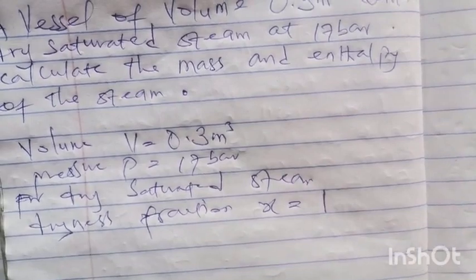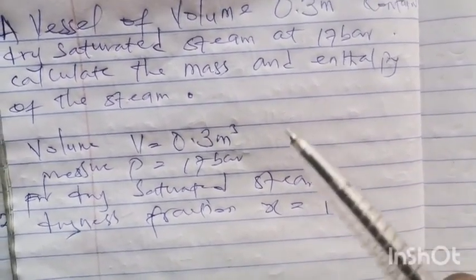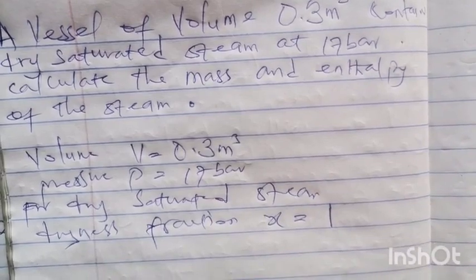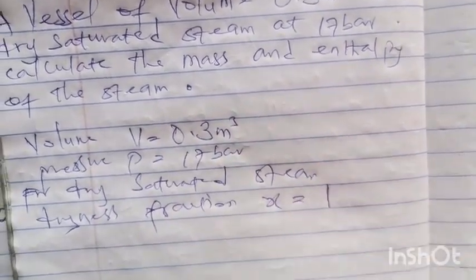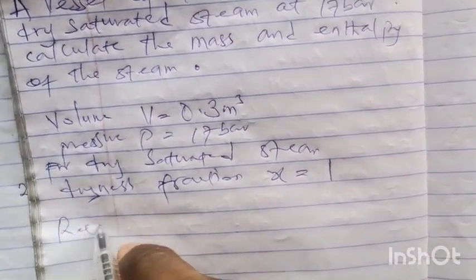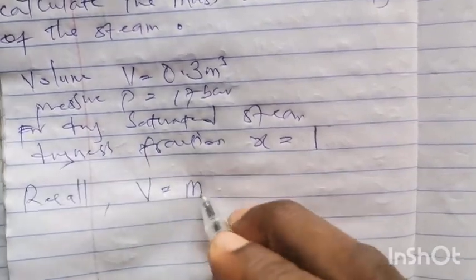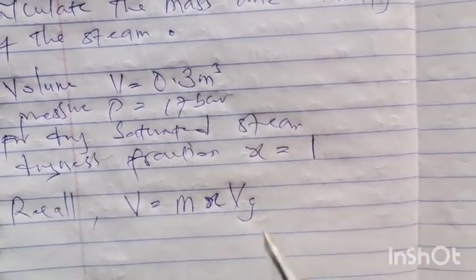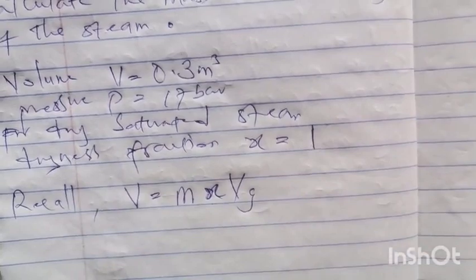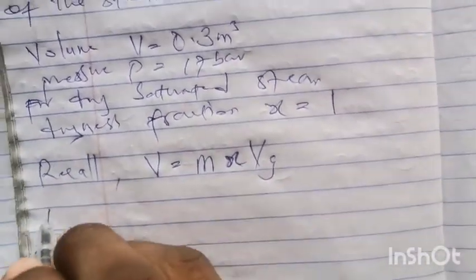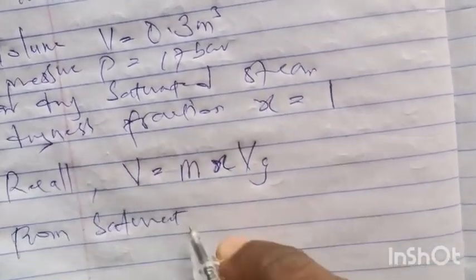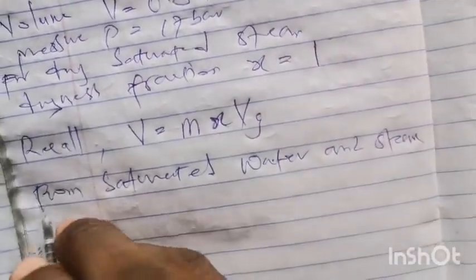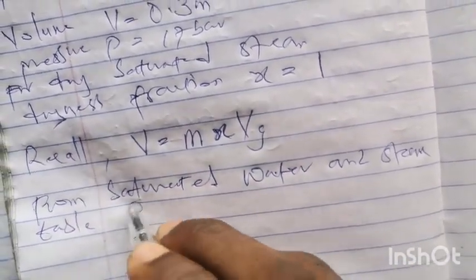Since the steam is saturated, we have to go to the saturated water and steam table to get our values. Total volume V is given as 0.3 meter cube, and recall that total volume V equals mass times dryness fraction x times specific volume at the steam region.